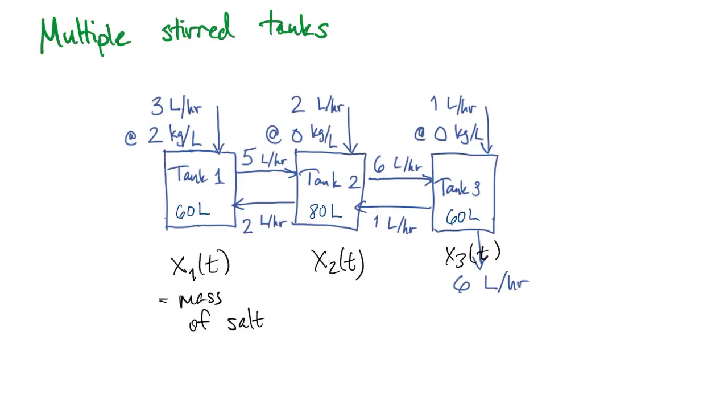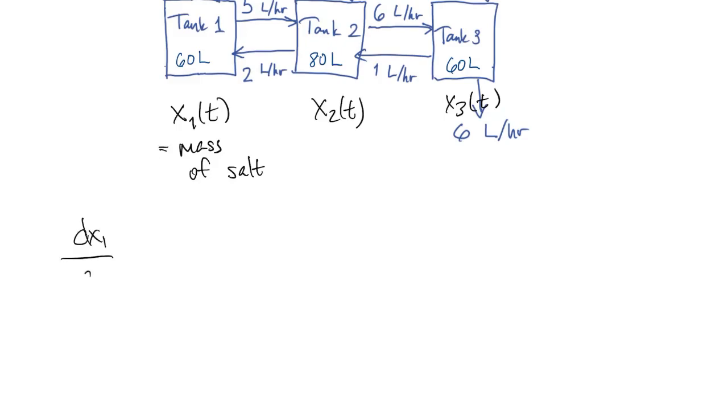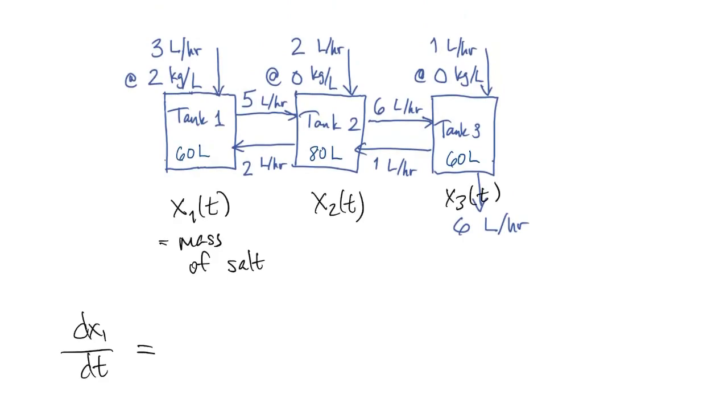We're going to let x1, x2, and x3 be the mass of salt in each of these three tanks. Then the rate of change of mass of salt in tank one.